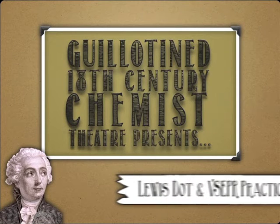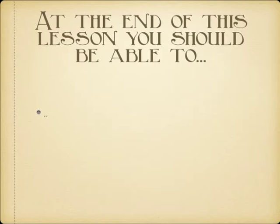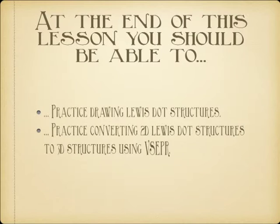Hello and welcome back to the guillotined 18th century chemistry theater. In the last couple lessons we've been talking a lot about Lewis dot two-dimensional structures, and we've been talking about the three-dimensional structures that are formed from those, VSEPR or VSEPR, as some people who like to pronounce things correctly call it.